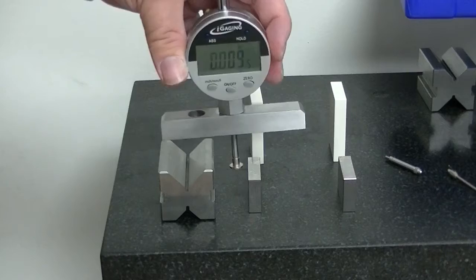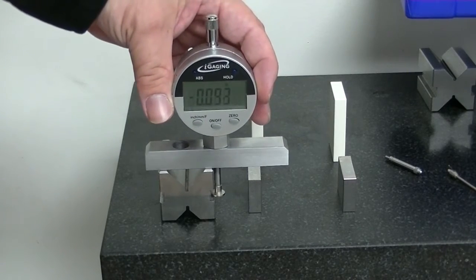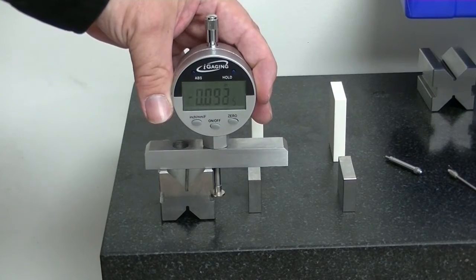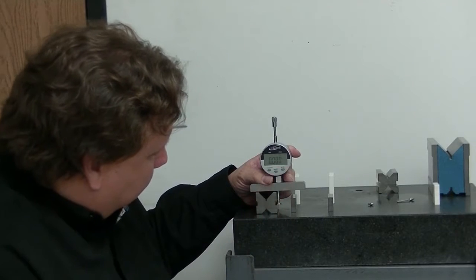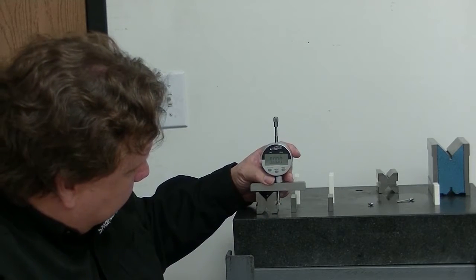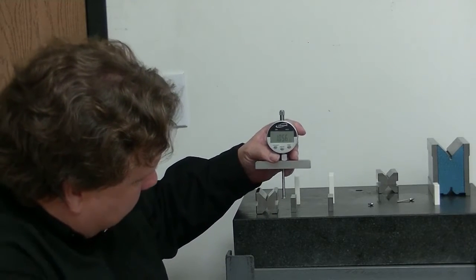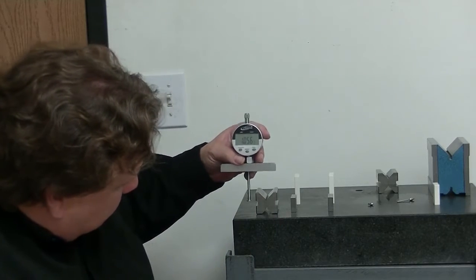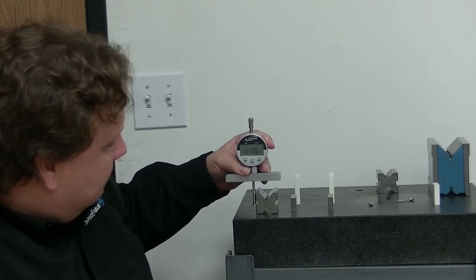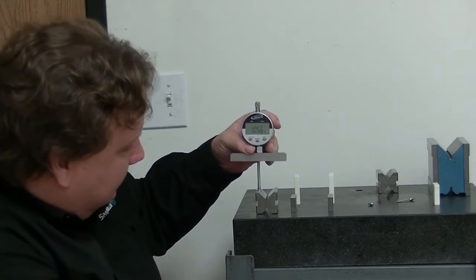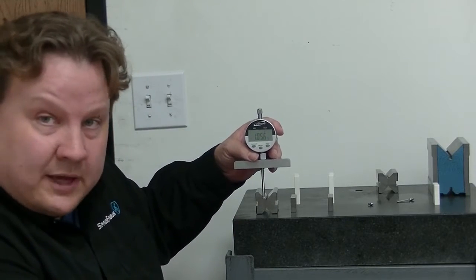And then when I put the nose piece down here on the side, I can actually set that to zero. Calibrating. And then I can measure other indents, like on this side here. And I still get zero on that side. So that's pretty handy if you need to get to a place that you can't reach.